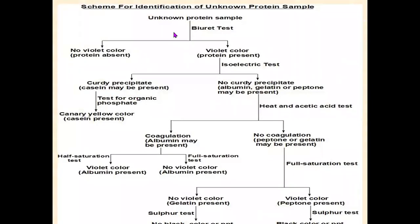This is the chart scheme for identification of an unknown protein sample. When you carry out identification, this will be the chart. An unknown protein sample is given to you, and the first test you have to carry out to identify whether the given sample is protein or not is the biuret test.